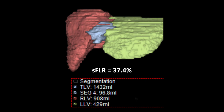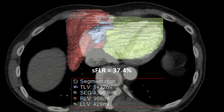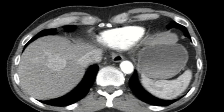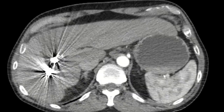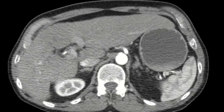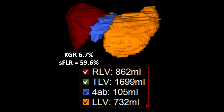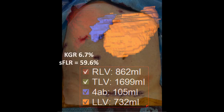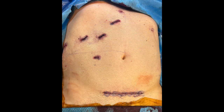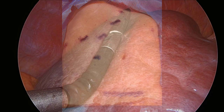With a calculated future liver remnant less than 40%, the patient underwent portal vein embolization with a good response — a kinetic growth rate greater than 2% and a future liver remnant of almost 60%. The patient was positioned in a modified French position with split legs. We used five subcostal working ports and extracted through a fan-and-steal incision. An additional port was placed inferiorly to help with better angles on the cava.